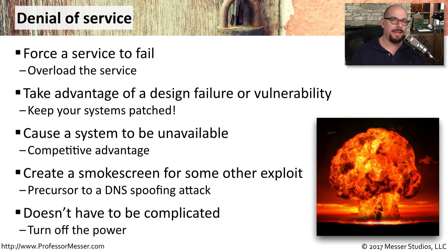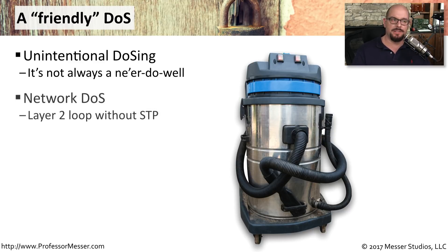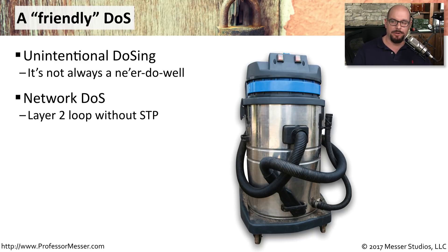This doesn't have to be a complicated method. It could be something as simple as turning off the power to a building — that would certainly cause a denial of service. Sometimes a denial of service isn't something happening maliciously, but it is still causing problems for people trying to gain access to a service. For example, somebody creates a network loop, you don't have spanning tree enabled on your switches, and now nobody can communicate on your network.